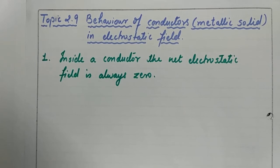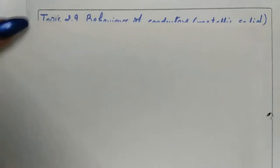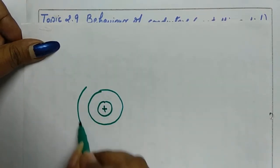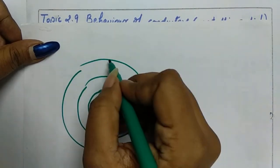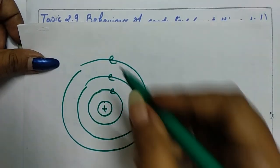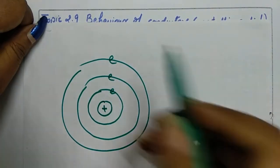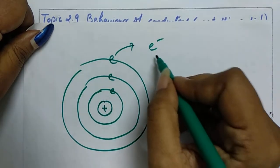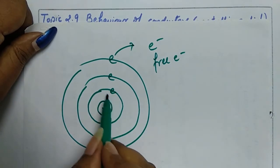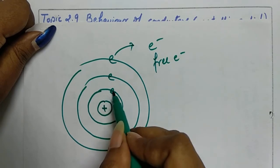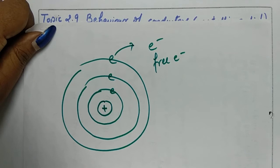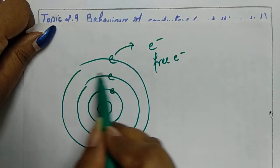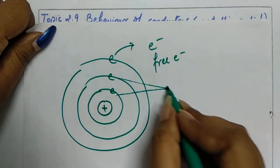First we will understand what are free electrons and bound electrons. Suppose this is a positively charged nucleus — we have energy levels around the nucleus in which electrons are revolving. As you move away from the nucleus, the bonding between the electron and nucleus becomes weak, and if this electron gains energy from outside, it can come out of its shell and become a free electron. But an electron very nearby to the nucleus has very strong bonding, so it is very difficult to remove it from its shell — it will not come out. These electrons are known as bound electrons.